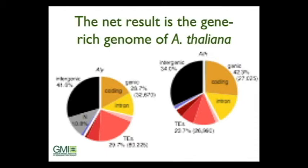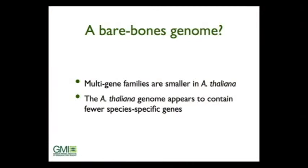The net result of these changes is that Arabidopsis thaliana has become the excellent model system it is — in thaliana, genic content is about 42 percent of the genome, whereas in lyrata the estimate is less than 30 percent. What's gone missing is intergenic DNA and transposable elements. In some sense it looks like thaliana is a bare-bones genome — stripped down, with smaller multi-gene families and very few species-specific genes.